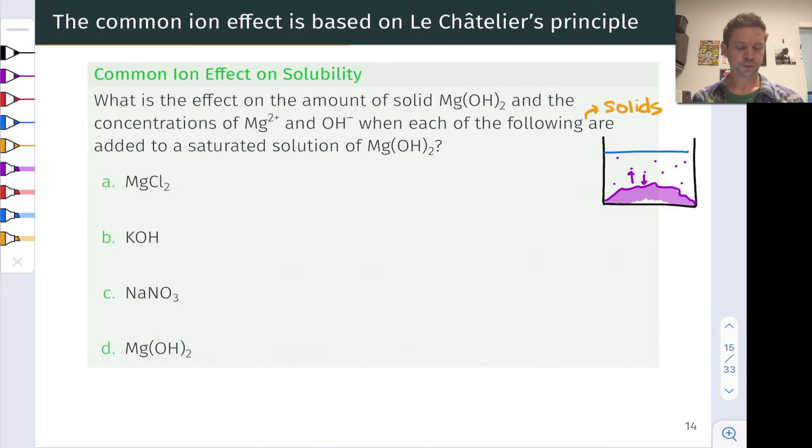All right, so the first solid here is MgCl2, magnesium chloride. And actually, before we get into that, let's note that Qsp is equal to the magnesium concentration times the hydroxide concentration squared. We're going to be thinking about Qsp versus Ksp as we work through each of these. And so having that down now will be helpful. All right, for magnesium chloride...